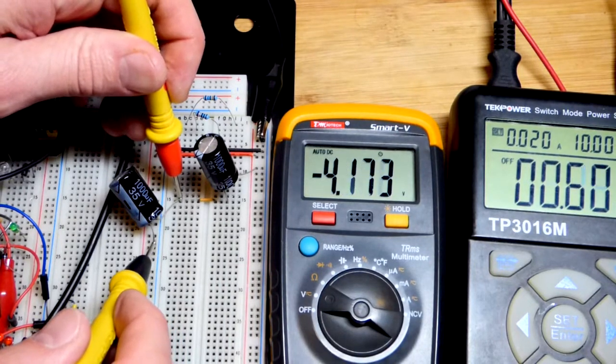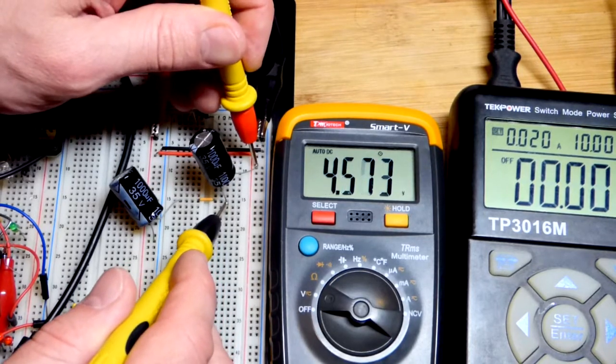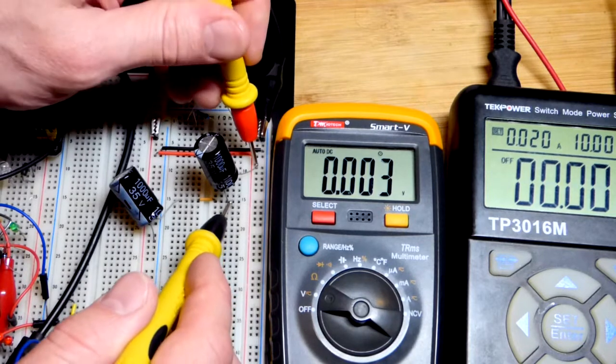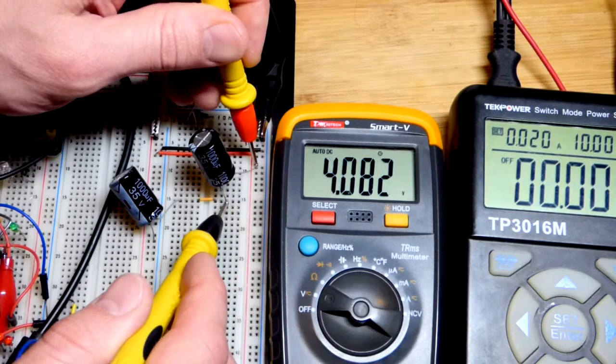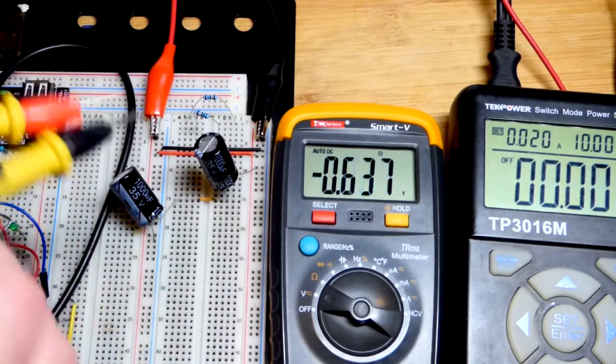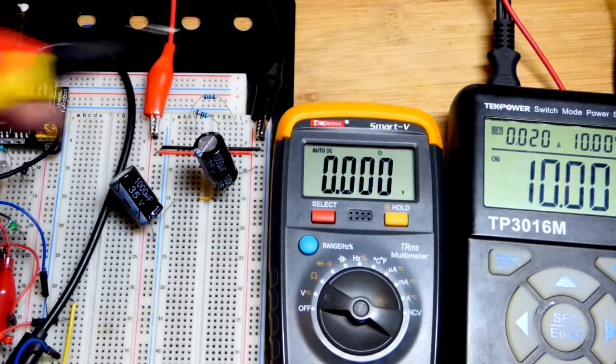But there you can see we actually have a negative voltage which is building up because this capacitor is reverse charging that capacitor. So it's going to stop somewhere about positive five volts for that capacitor and somewhere about negative five volts for that capacitor. It's very bad to give capacitors, these electrolytic ones, a negative voltage.